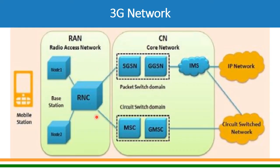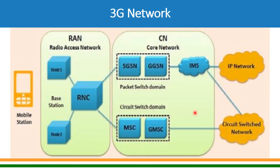The BSC is now called the Radio Network Controller — names have changed but functions are equivalent to BSC. On the core side there is a difference: the core has two parts. One is the circuit-switch domain, similar to the 2G network. In addition, a packet core network has been introduced — that is the packet-switch domain. All voice calls continue to be handled on the circuit-switch domain, but all data calls or internet data flow through the packet-switch domain.